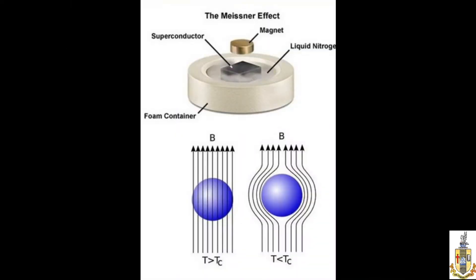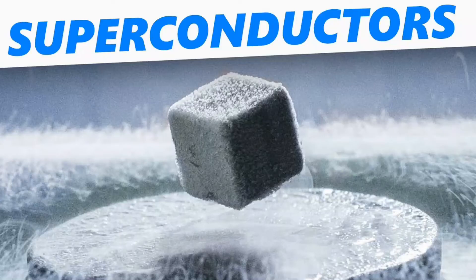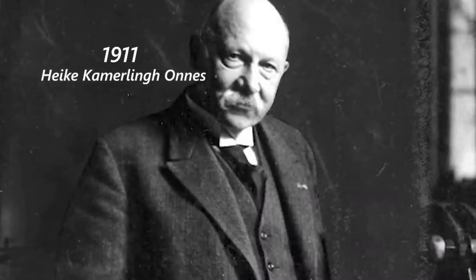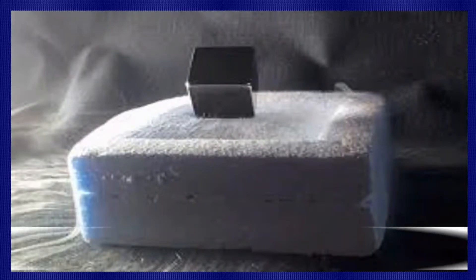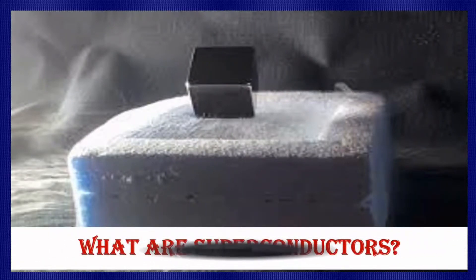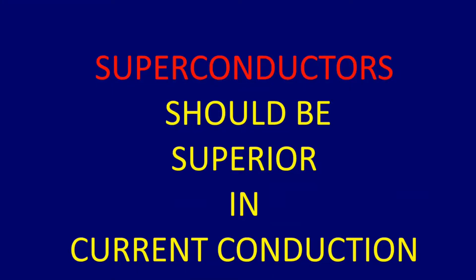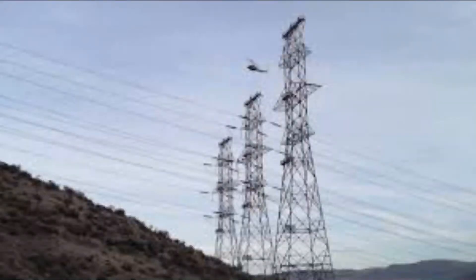The underlying phenomenon is just the Meissner effect exhibited by superconductors. What are superconductors? Why should they be referred to as super? As the name suggests, they should be superior in current conduction.